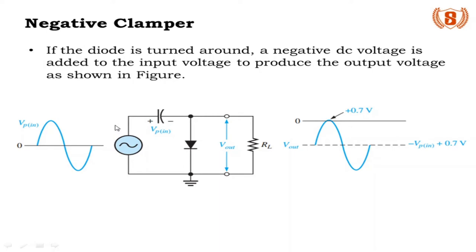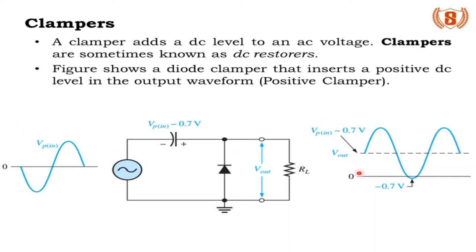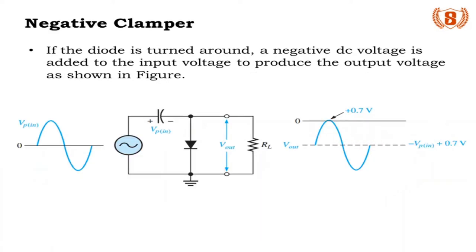What you are seeing now is the negative clamper circuit. The basic difference between positive and negative clamper circuits is the connection of the source and the diode. In the negative clamper, the first half cycle is positive, so the upper terminal of the supply is positive and the lower terminal is negative. The positive terminal connects to the capacitor, the negative terminal to the ground and to the cathode of the diode — meaning the diode connection is also reversed. In the positive clamper, the output voltage is shifted above zero; in the negative clamper, it is shifted below zero.